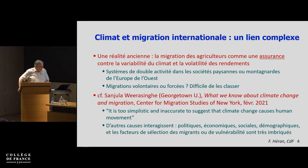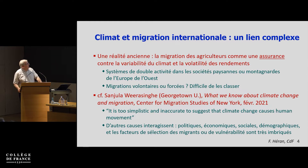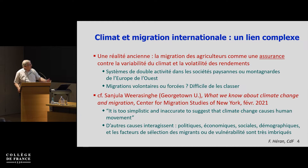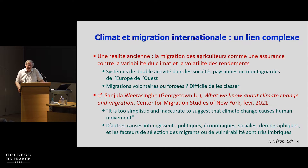If I consult the existing literature about this question, one of the most detailed reports I've discovered is from Georgetown University — what we know about climate change and migration. It concludes that it is too simplistic and inaccurate to suggest that climate change causes human movement. And I think most of the presentations we've heard this morning are on the same line.